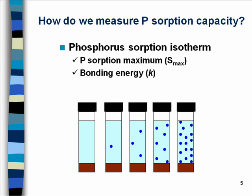How do we measure phosphorus sorption capacity? The technique many people use is the phosphorus sorption isotherm. This technique gives us two very important parameters. The first is the phosphorus sorption maximum, which tells you the maximum sorption capacity of the soil. The second is the bonding energy K, which represents the affinity of phosphorus to be sorbed by the soil. Phosphorus sorption isotherm is kind of trial and error because you don't know how much phosphorus could be sorbed by your soil.